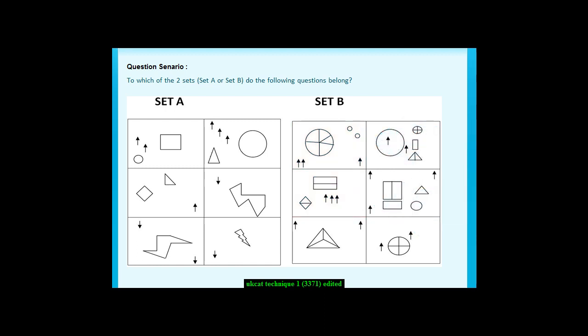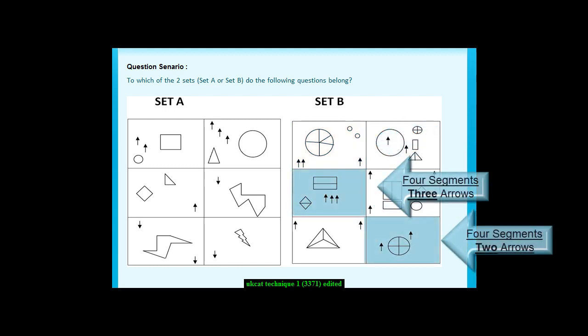Count the number of segments and compare it to the number of arrows. Again, there is no relationship.